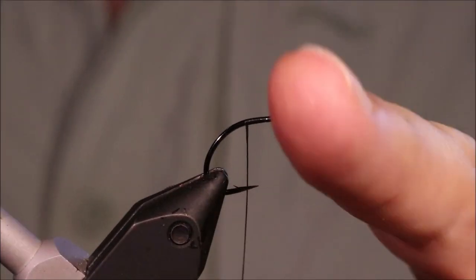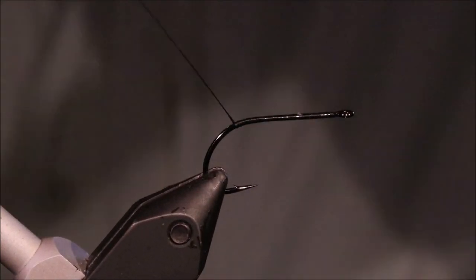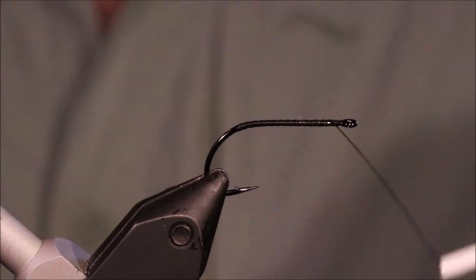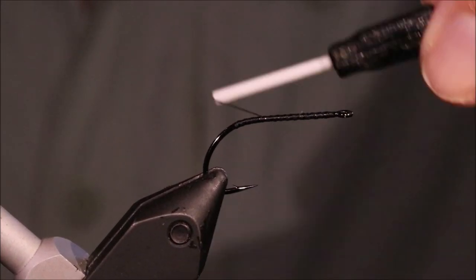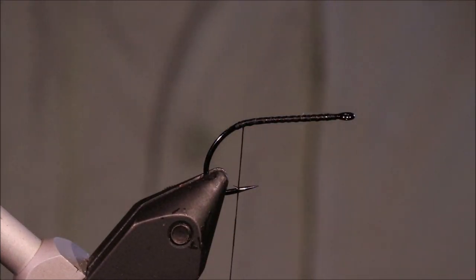I'm using a B10S, good hook. And I'm running on, this is just some black uni in 6-hole. I've got a nice wee base of thread on, this will help the body to stick, the glue to grip.